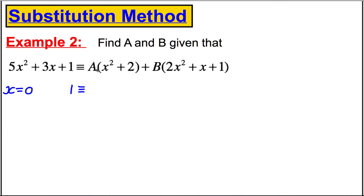Let x be 0. This side would then become 1, would be identical to A times 2, so 2A, plus, if this here, if that was 0, that was 0, then I'd just have 1. So I'd have plus B. What else could I do?